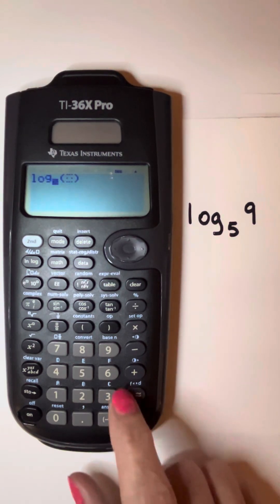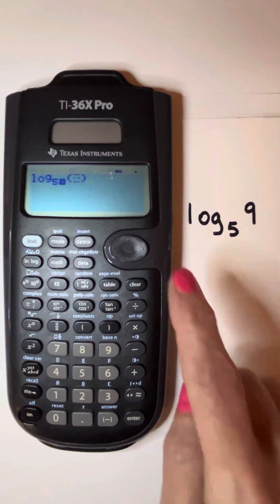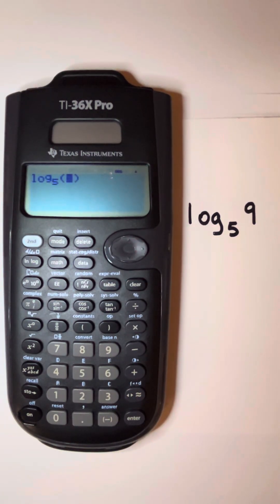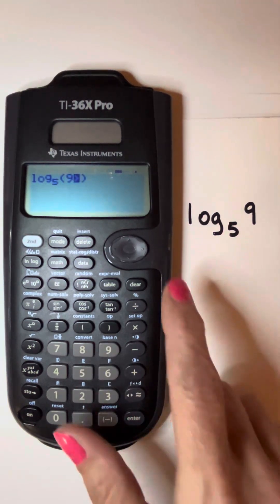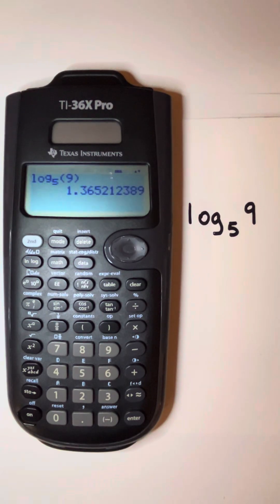So in this example, our base is five, so I'm going to press the five for our base, and then use the cursor to scroll to the next spot, our argument, and then press the nine. And I can either scroll out of it, or if I just went ahead and hit enter, it's going to tell me what log base five of nine is. And that's how we can put any logarithm with any base into the TI-36X Pro calculator.